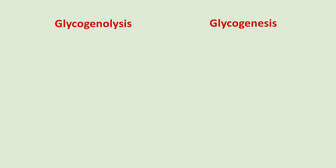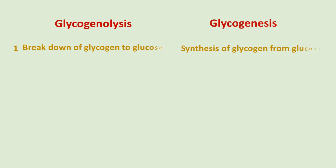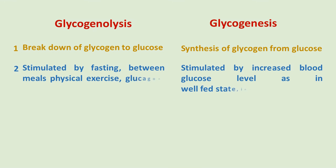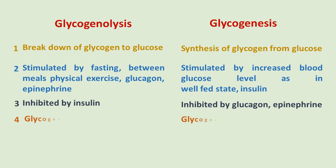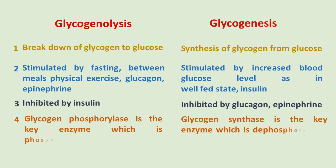Comparing Glycogenolysis and Glycogenesis: Glycogenolysis is the dissolution of glycogen to glucose, while Glycogenesis is the formation of glycogen from glucose. Glycogenolysis is triggered by fasting between meals, physical exercise, glucagon, and epinephrine; while Glycogenesis is triggered by an upsurge in blood glucose as in the well-fed state, and by insulin. Glycogenolysis is inhibited by insulin, but Glycogenesis is inhibited by glucagon and epinephrine. Glycogen phosphorylase is the key enzyme in Glycogenolysis and is phosphorylated in its active form, while glycogen synthase is the key enzyme in Glycogenesis and is dephosphorylated in its active form.